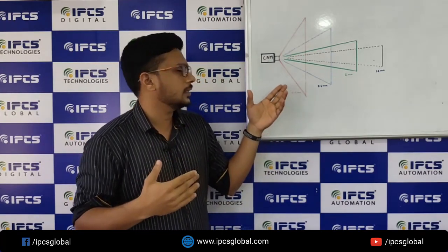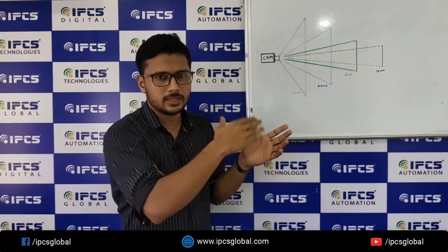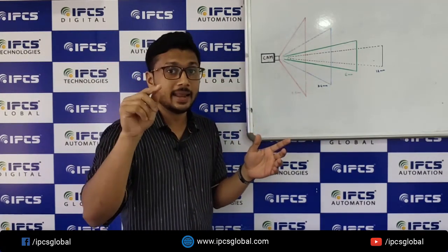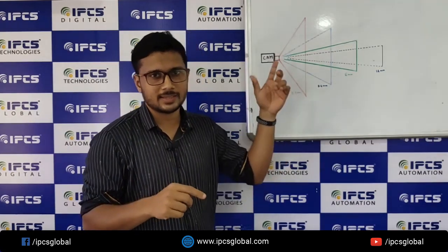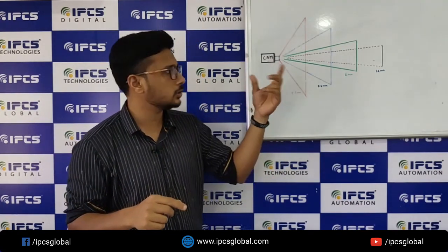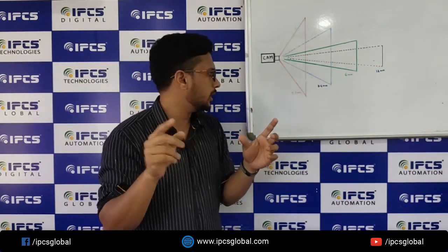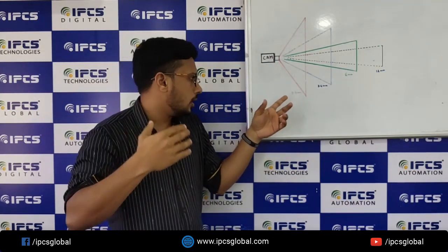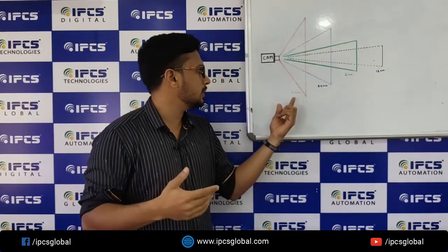These values — 2.8mm, 3.6mm, 6mm, 12mm — are lens specifications. Focal length is exactly a lens specification, not a sensor or CCD/CMOS specification. Please keep that in mind.